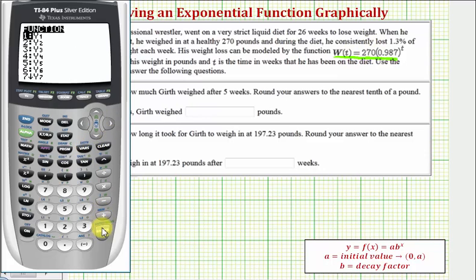Then in parentheses, five. And there's the function value or ending weight after five weeks. Notice how this is equivalent to substituting five for t. If we did that, we'd have 270 times 0.987, close parenthesis, raise to the power of five.